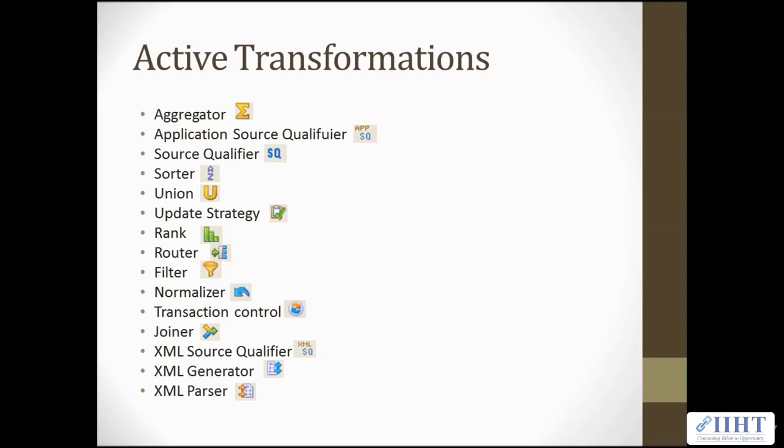delete, update, or reject rows. The Rank transformation limits records to a top or bottom range. The Router transformation routes data into multiple transformations based on group conditions. The Filter transformation filters data.